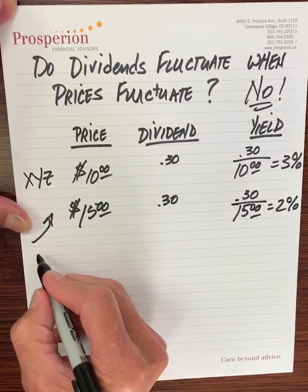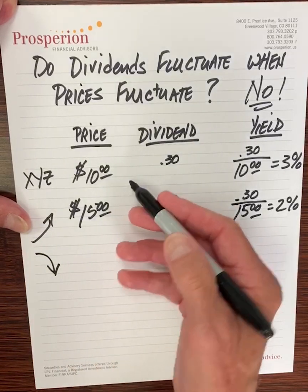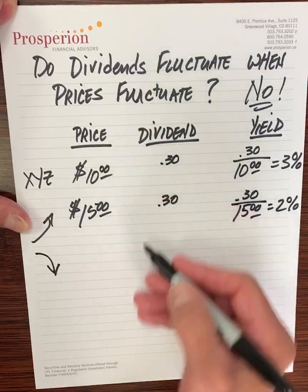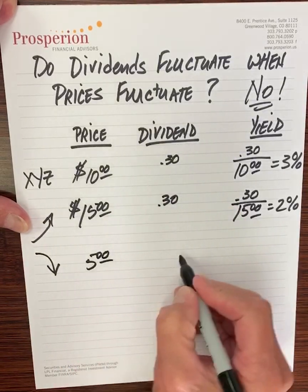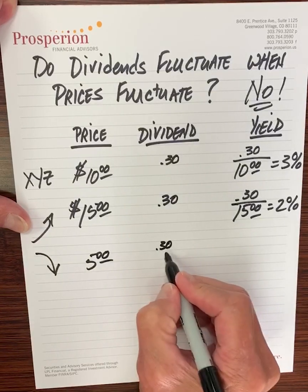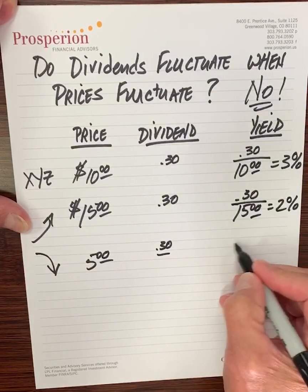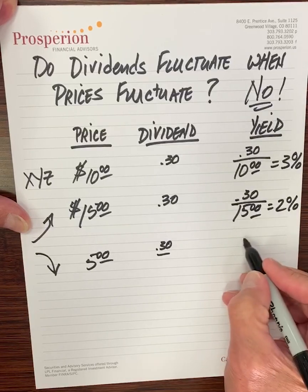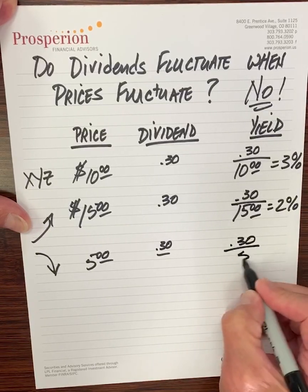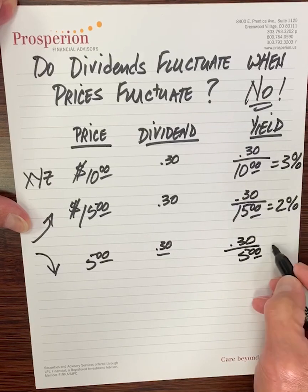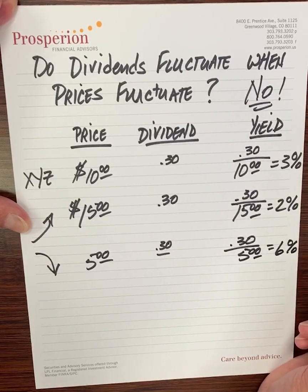On the other side of the coin, let's say that XYZ Corporation falls in value from $10 per share to $5 per share. It still pays that same $0.30 per share dividend. So to calculate the yield, it is $0.30 per share divided by $5, and that calculates out to a 6% yield.